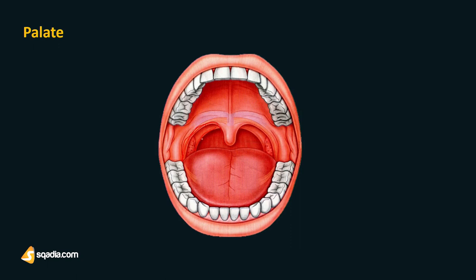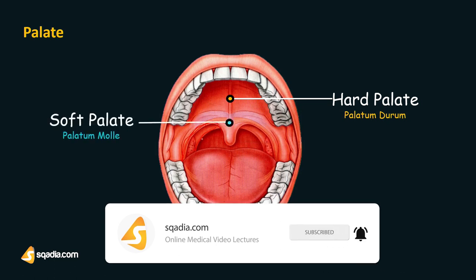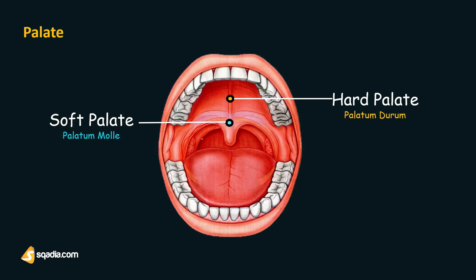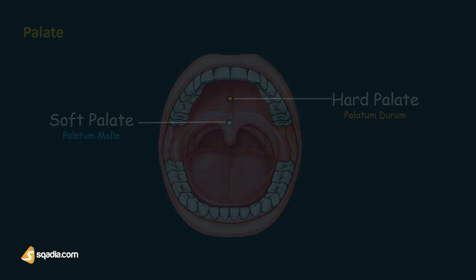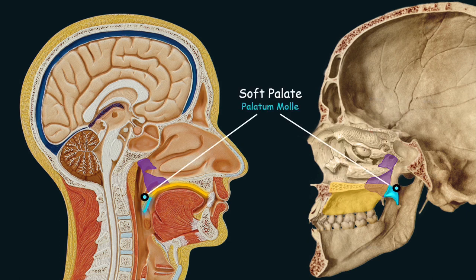There are two types of palates. First the hard palate, present anteriorly, known as the palatum durum, and the soft palate, known as the palatum molle, which forms the posterior part. The hard palate is immobile; its anterior aspect consists of the palatine process of the maxilla and the horizontal plate of the palatine bone comprises its posterior aspect. The soft palate is positioned posteriorly, is quite flexible, helps in swallowing, and comprises muscle fibers covered by a mucous membrane.